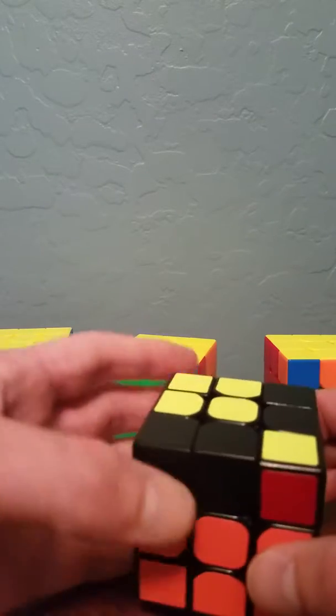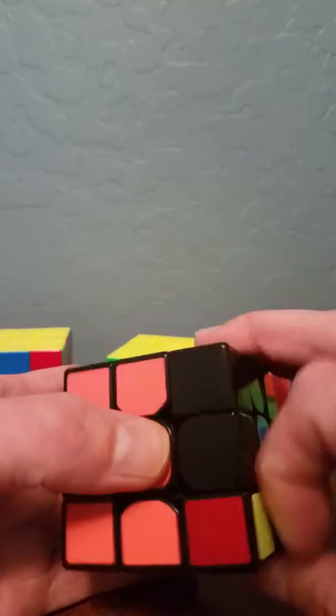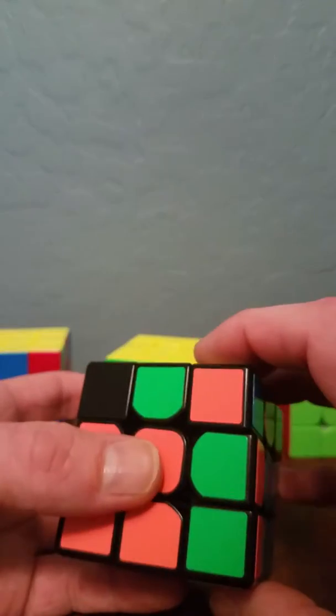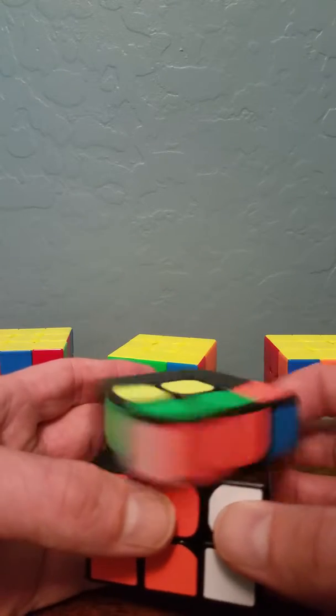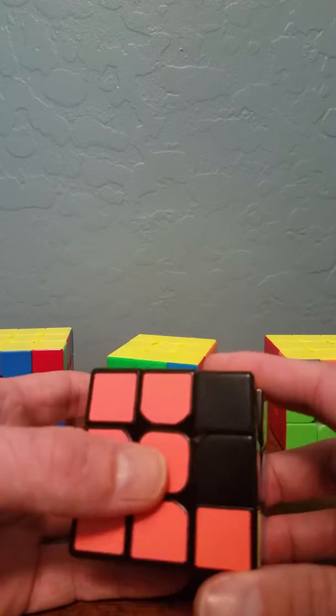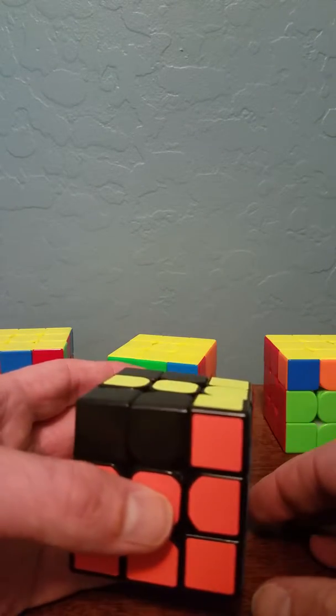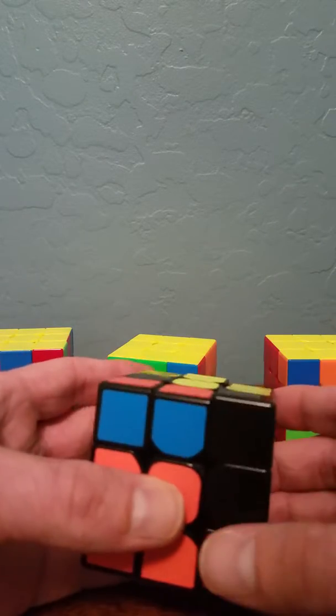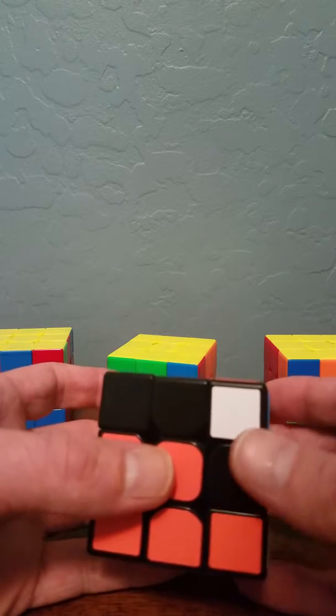Here's the algorithm: F R U prime R prime U prime R U R prime F prime. That's half of it. The second half is a sexy move, R U R prime U prime, and then a sledgehammer, R prime F R F prime.